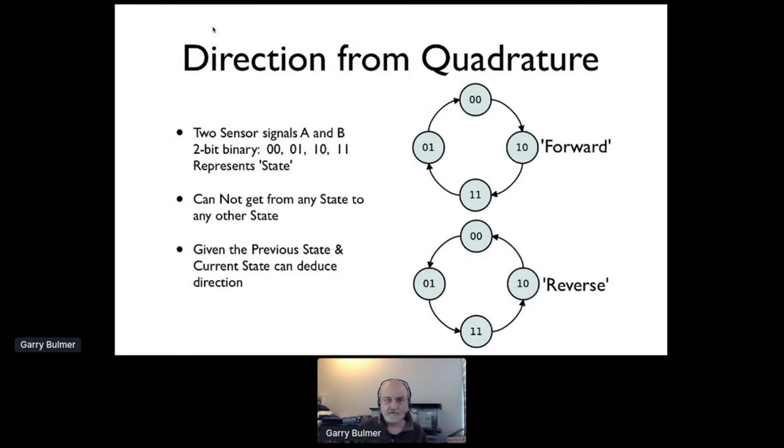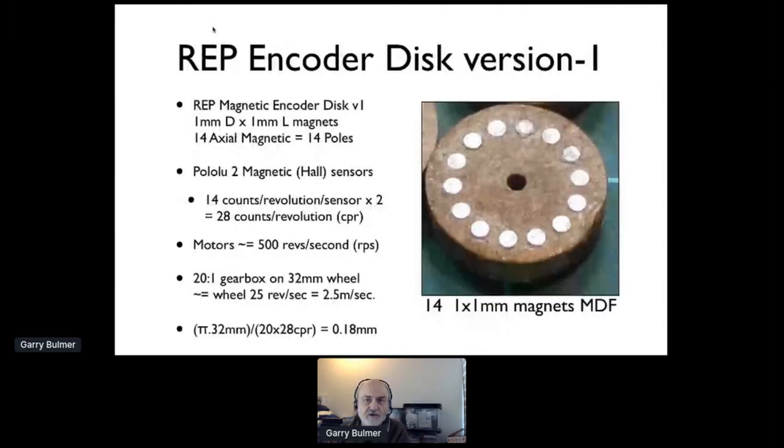The rep-encoder disk version 1 is in the picture here. The magnets are quite small, 1 millimeter diameter by 1 millimeter long, and that particular disk has 14 magnets arranged axially - the magnets are parallel to the back shaft out of the motor. This thing works with the Pololu hall sensors and gives a high resolution. We get 28 counts per revolution of the motor instead of 12. This encoder disc has been made on a CNC routing machine out of MDF.